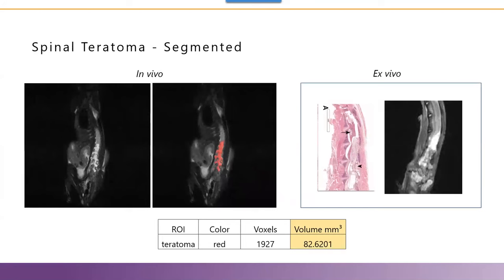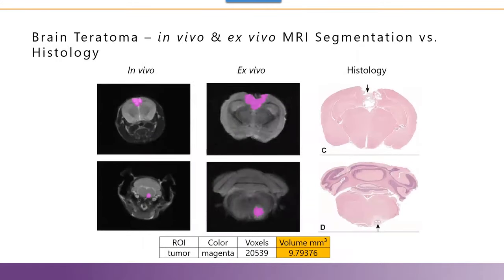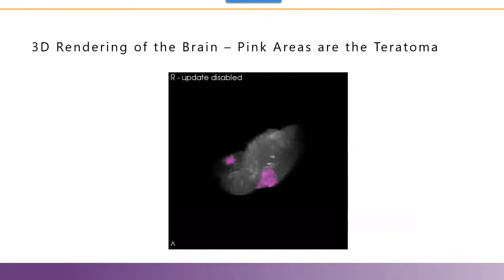Using in vivo and ex vivo MRI, spinal teratoma was demonstrated which correlated with histology. You can see on the left the MRI and segmentation, and on the right the histology and ex vivo MRI. Using ex vivo MRI, here you can see the segmentation of the spinal teratoma appearing in red. A brain teratoma was also demonstrated using in vivo and ex vivo MRI, correlating with histology as shown on the right, with the brain teratoma demonstrated by segmentation.